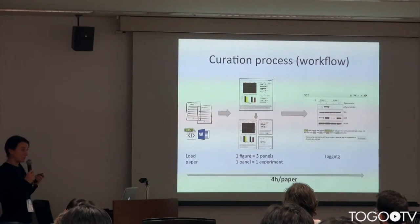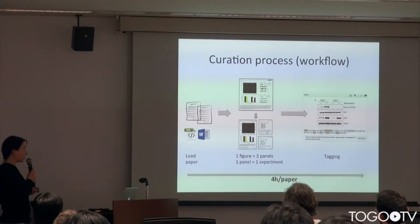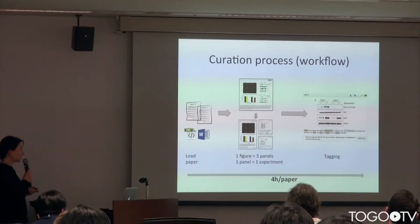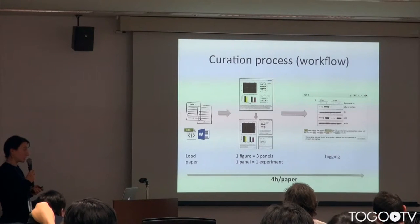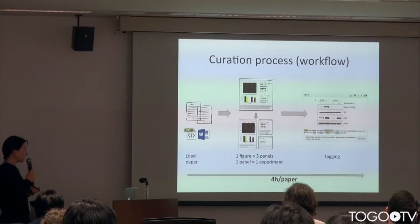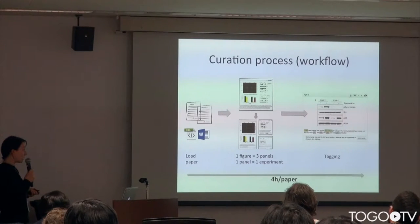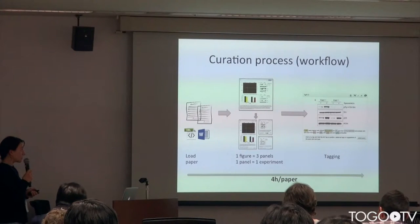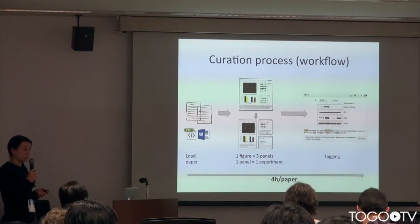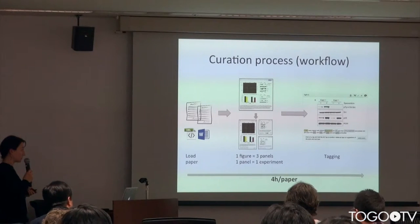To obtain this high-quality network, papers are manually curated according to this process. Firstly, papers are loaded on the curation interface in XML or Word format. Then each figure is split into panels, where one panel represents a single experiment. The curator must then tag all the entities of the figure legend. This process takes around 4 hours per paper to annotate all figures and tag all entities.